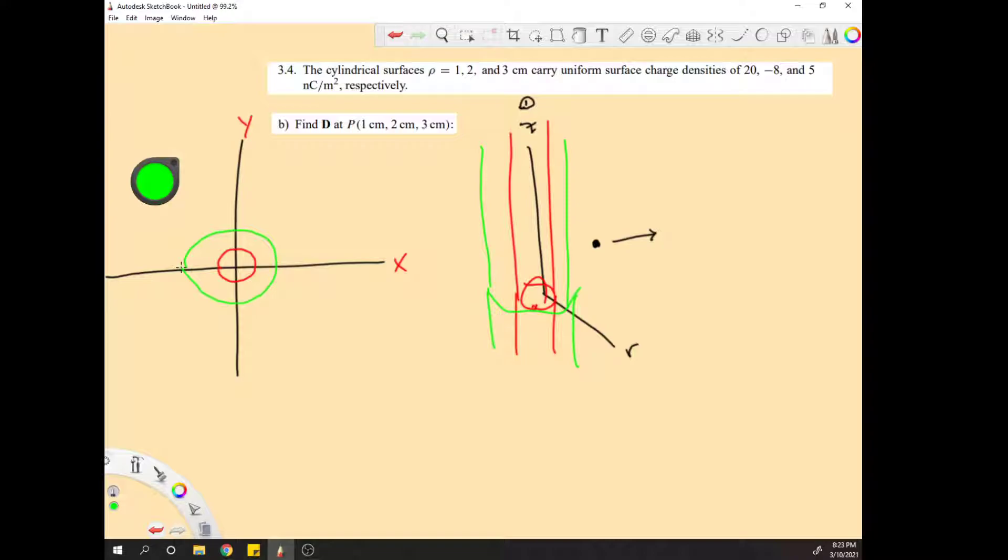Now we have to realize that this vector here is going to have no z component. That's because these cylinders run infinitely. Since these cylinders are infinite along z, there's going to be no component of z because there's an equal amount of charge up here as there is down here relative to that point. So P has no z component, and just to make that more clear, D of P, the electric flux density at point P.